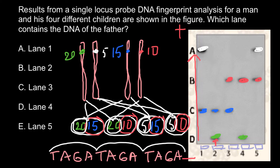So as you can see, our answer would be that person number three is the father of children one, two, four, and five. So the correct answer would be answer C.